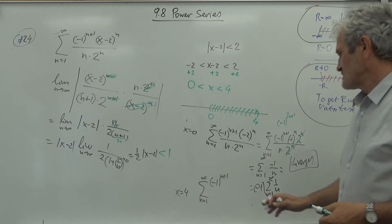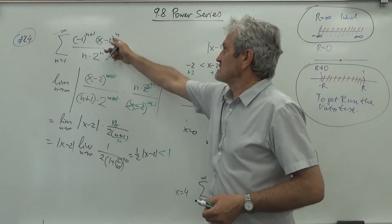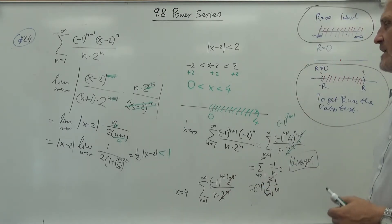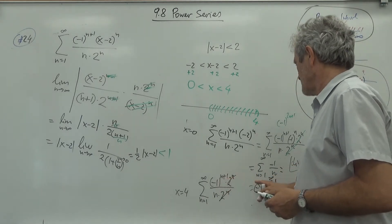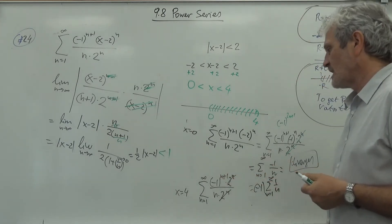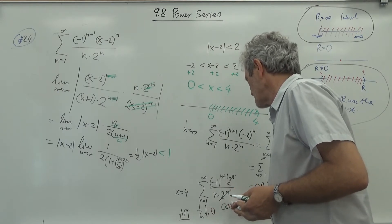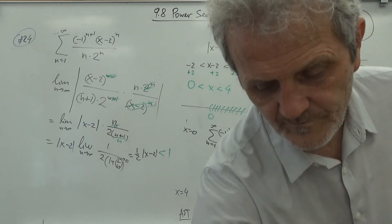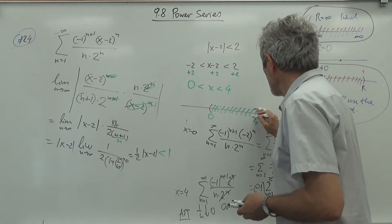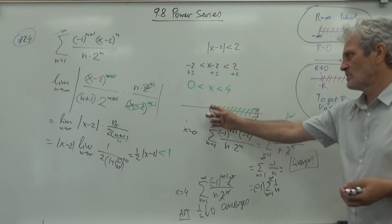When x=4, we get (4-2)^n = 2^n, and dividing by n times 2^n leaves (-1)^(n+1) over n. This is an alternating series where 1/n monotonically decreases to 0, so by the alternating series test it converges. Therefore the interval of convergence is (0, 4] — diverges at the left endpoint, converges at the right endpoint. All cases are possible: diverge at both, converge at both, or one of each.